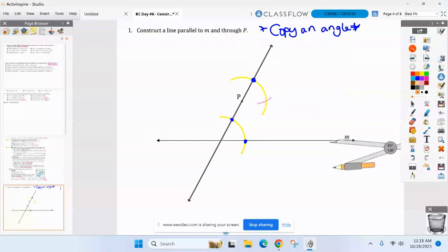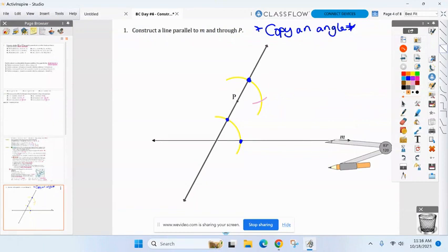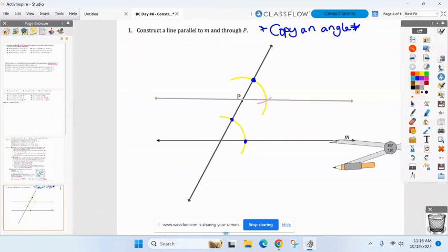Now you guys can grab your straightedge and draw in your parallel line. Line up your straightedge with point P and that two arcs intersection. So all this is is copying an angle after you make your transversal.